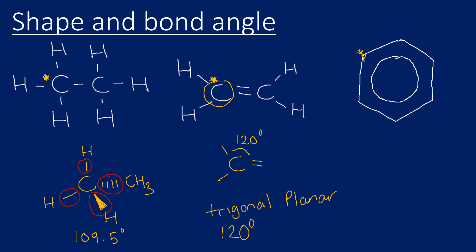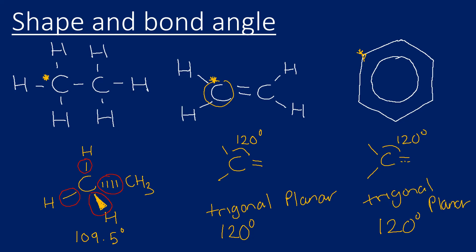It's exactly the same in benzene. Although the bonding isn't identical to an alkene, the bond angle is again 120 degrees, and the shape is also trigonal planar. So to summarize: alkane carbons are tetrahedral with a bond angle of 109.5 degrees, and all carbons in a double bond or in benzene are trigonal planar with a bond angle of 120 degrees.